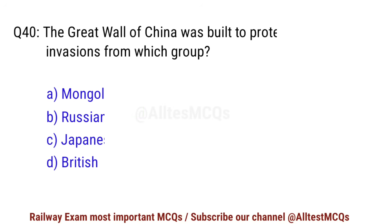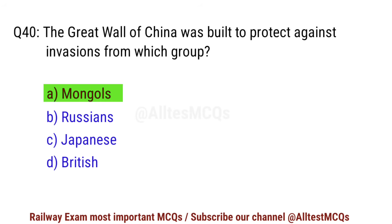Q40. The Great Wall of China was built to protect against invasion from which group? Correct option is A. Mongols.